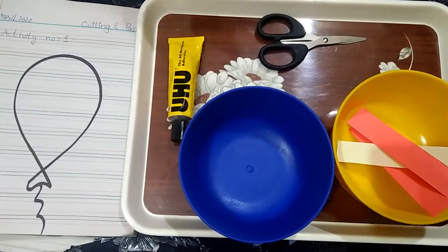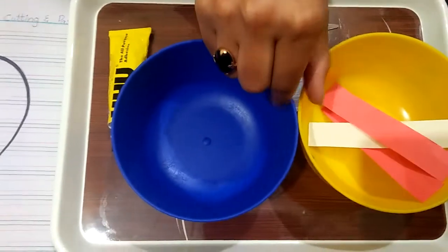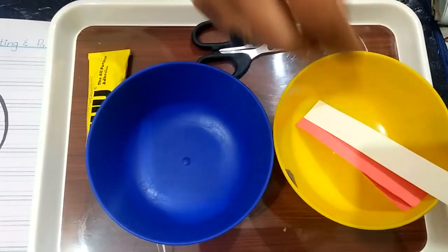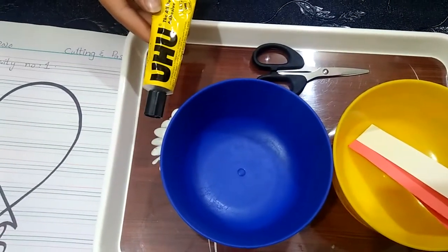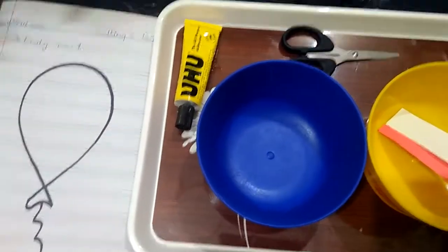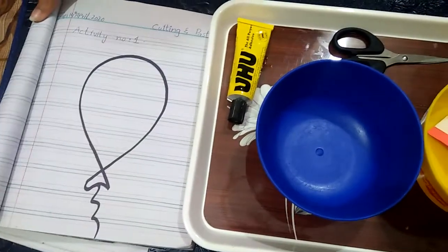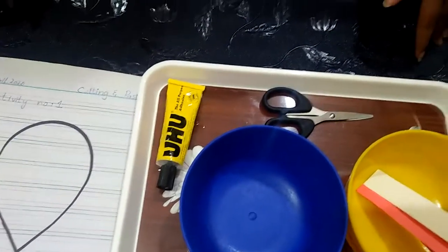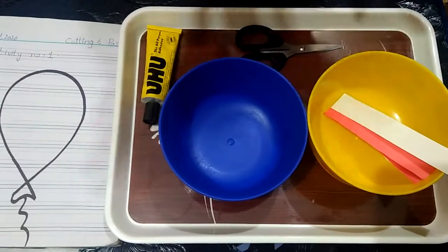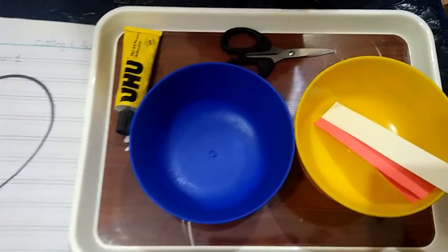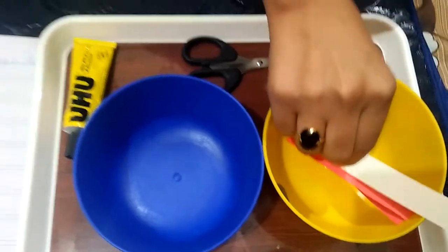For this activity we need the following things. As you see here we have two small bags, colored paper strips, scissors, UHU glue—we need gum, I don't have it that's why I'm using this—a tray, activity notebook, and a sheet or a mat. Now let's start the activity.